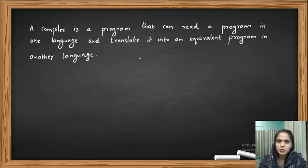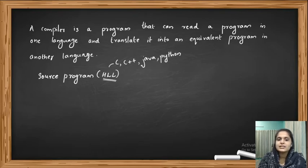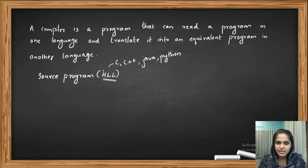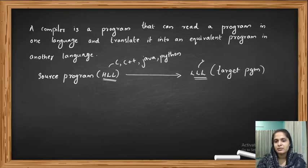What is the source program and target program? Source program means it will be some high level languages, for example C, C++, Java, Python. The compiler will translate this high level language into some low level language and that is our target program. Low level languages are for example assembly language or machine code.